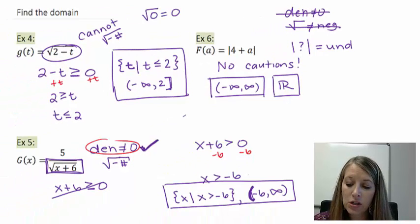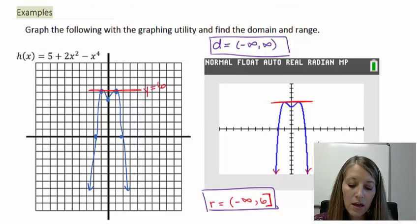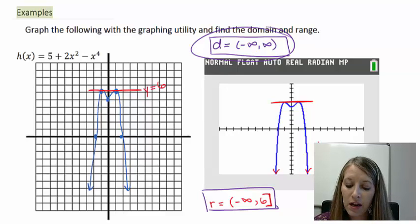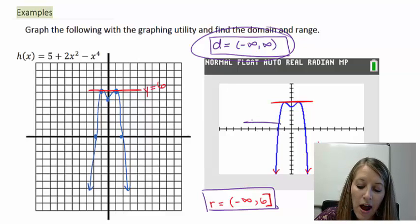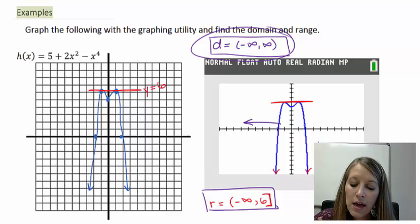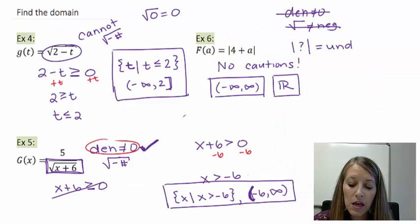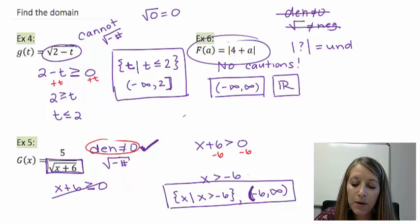This kind of relates back to this graph here. Notice my domain here was negative infinity to positive infinity, because my graph continued forever in the left hand motion and it continued forever in the right hand motion. That's going to be the exact same thing that's going to happen here.